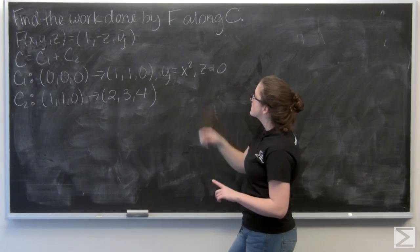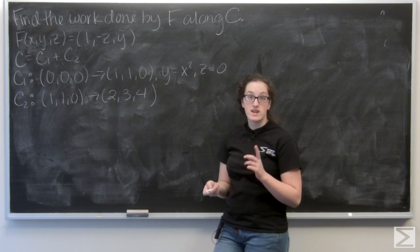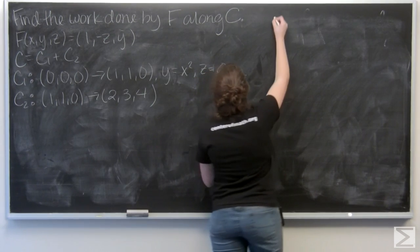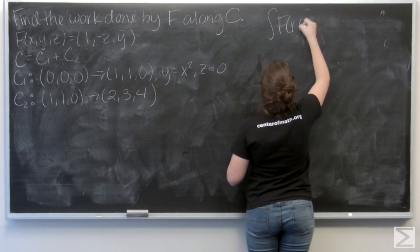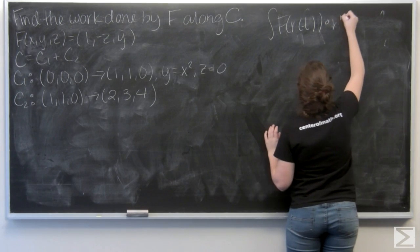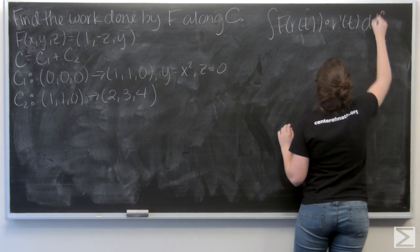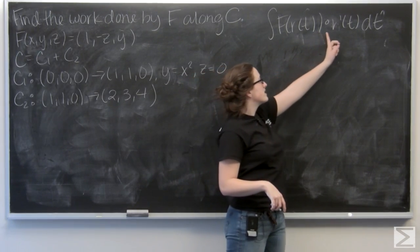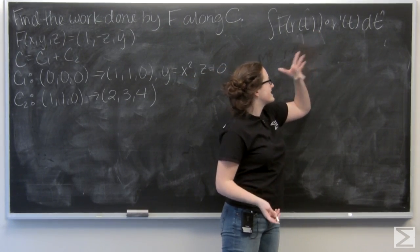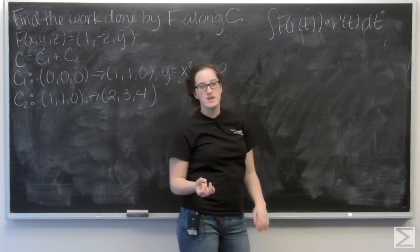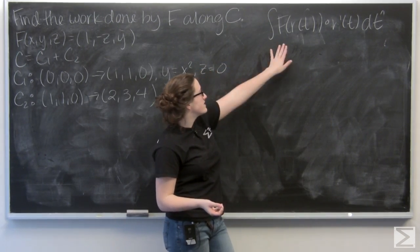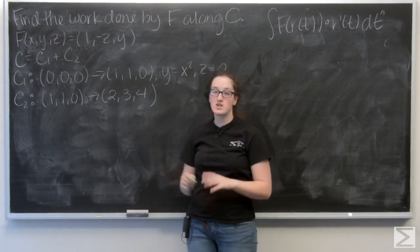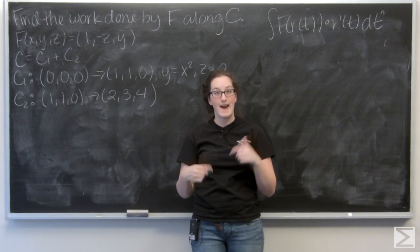So to find the work done by f along c, I need to calculate a line integral. So let's write the general form for a line integral. So it is the integral of f of r of t dot product with r prime of t. In this general form, r of t is the parametrization of the curve. Well, here with two curves, I'm actually going to do two separate line integrals and then add them together at the end.